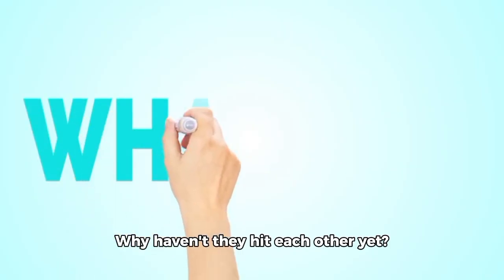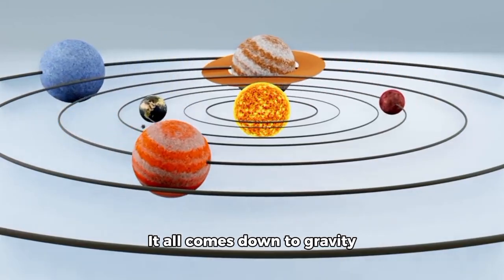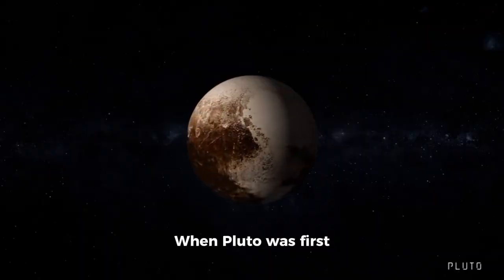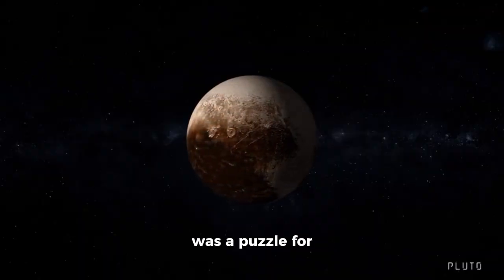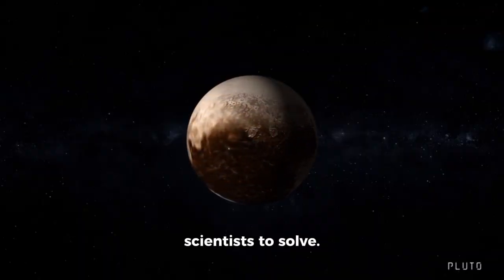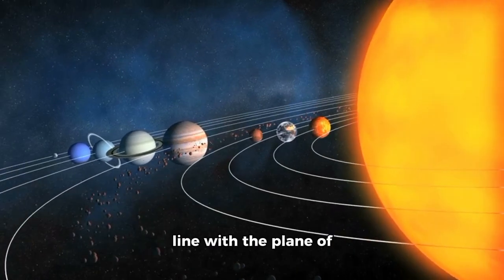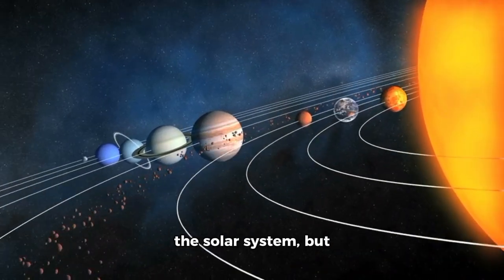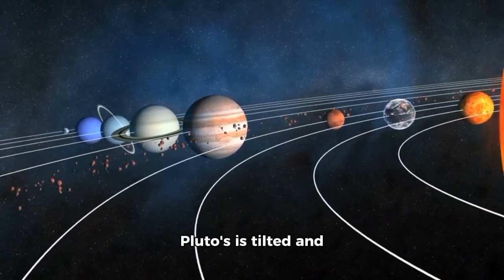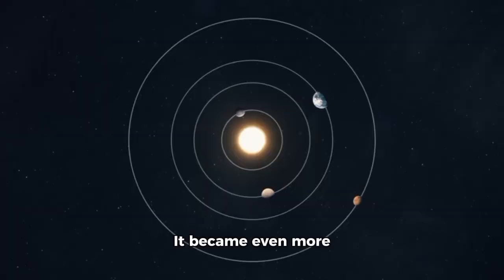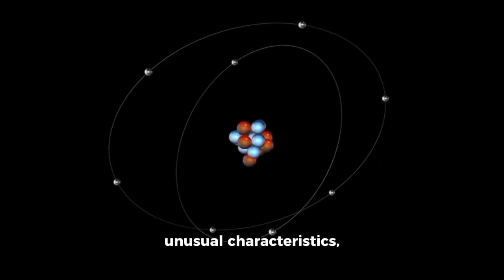Why haven't they hit each other yet? It all comes down to gravity from the other planets. When Pluto was first discovered, its orbit was a puzzle for scientists to solve. Most planets orbit in line with the plane of the solar system, but Pluto's is tilted and stretched out. It became even more puzzling when they realized that Pluto's orbit crosses Neptune's. Even with all these unusual characteristics, Pluto's orbit is steady because of how gravity works in space.